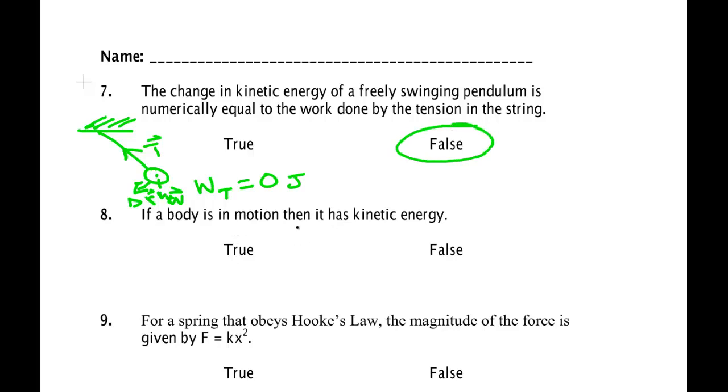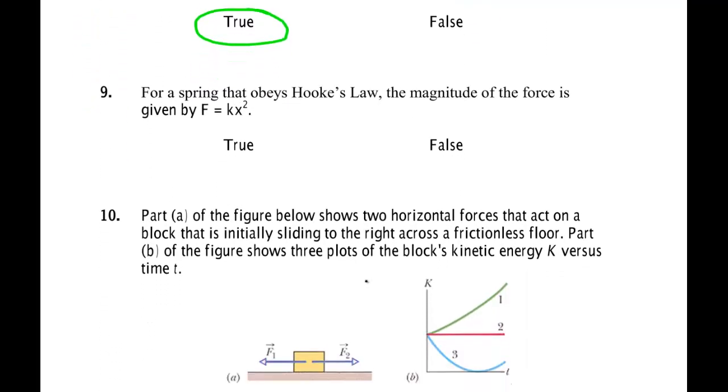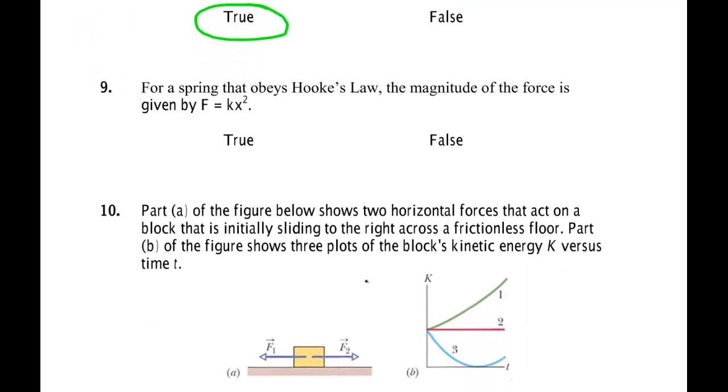A body is in motion, then it has kinetic energy. True. By definition, kinetic energy is the energy a body has due to its motion. For a spring that obeys Hooke's law, the magnitude of the force is kx squared. False. The magnitude is kx, not kx squared. That's the problem right there.